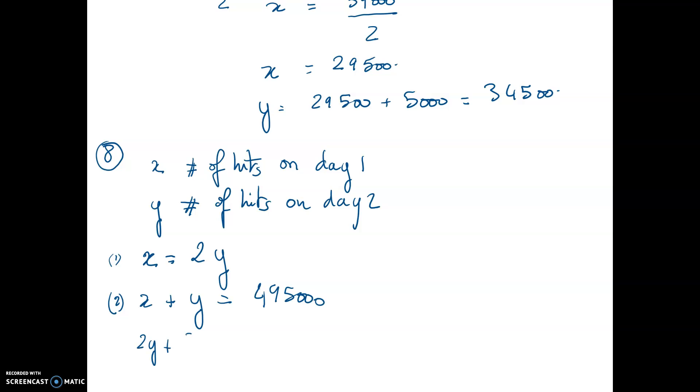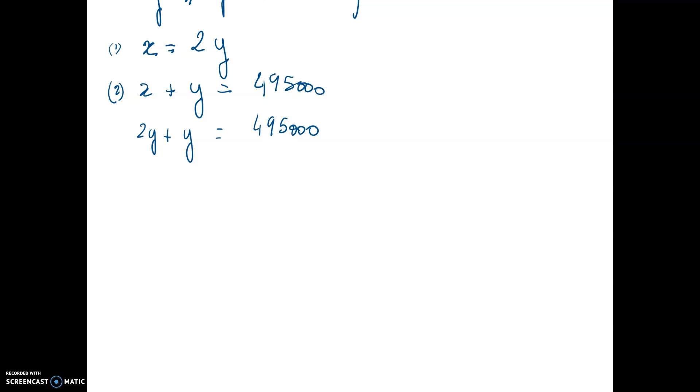And so if I substitute x from my equation number 1 into my equation number 2, I got 2y plus y equals 495,000. So 3y equals 495,000.